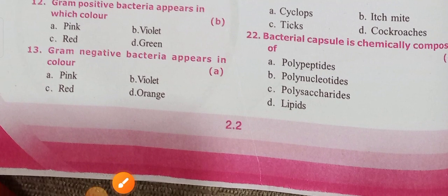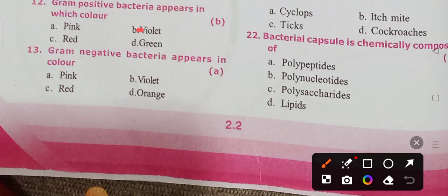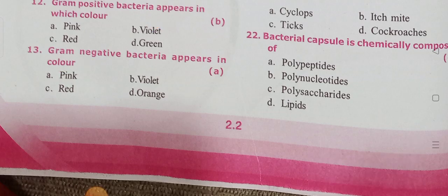Gram positive bacteria appear in which color? Option B: violet. Gram negative bacteria appear in pink color. So gram positive is violet and gram negative is pink.